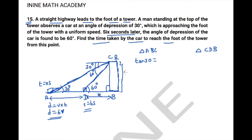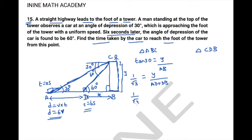tan 30 = y / AB. tan 30 is 1/√3. AB is nothing but AD + DB, so 1/√3 = y / (6v + x). This is equation 1.